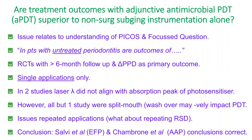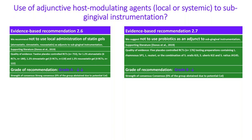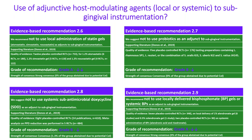Recommendation 2.6: We recommend not to use local administration of statin gels — insufficient evidence and all from the same group. Same for probiotics currently — it's a suggestion not to use them, though the literature is emerging and that will likely change. There's a suggestion not to use sub-antimicrobial doxycycline. We recommend not to use locally delivered bisphosphonates. Studies exist on local bisphosphonate delivery as an adjunct to root surface therapy. The same recommendations apply against non-steroidals, omega-3 polyunsaturated fatty acids, and metformin gel as adjuncts — all fairly strong recommendations against.